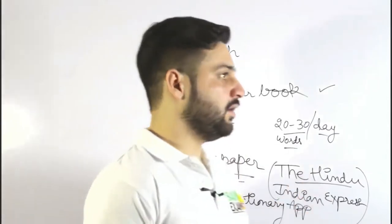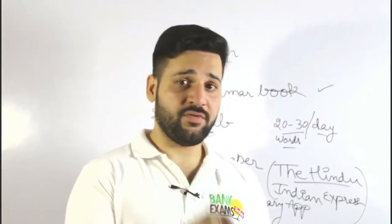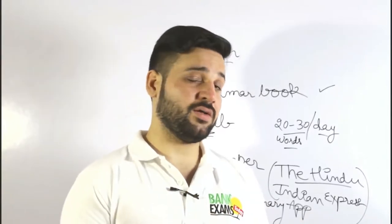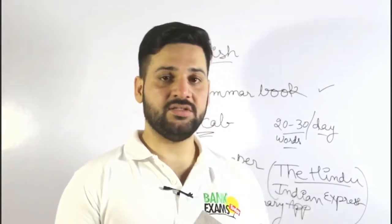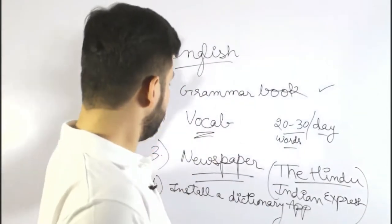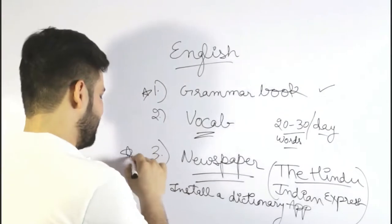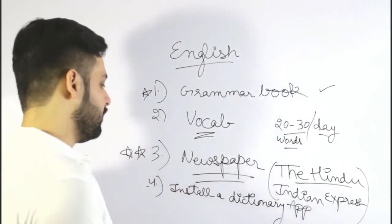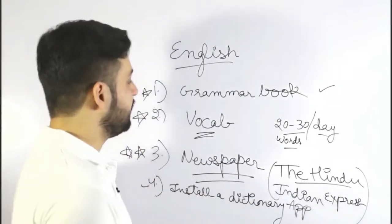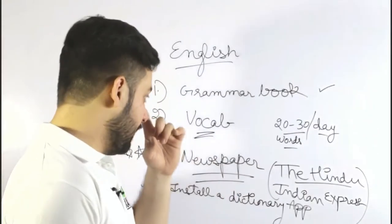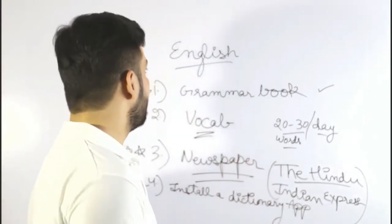For the reading comprehension part, I have an RC workbook ebook available for free on bankexamstudy.com. It contains exam-level RCs, so follow that book. To summarize the English section: the grammar book is the most important thing, followed by the newspaper. The dictionary is optional. I'm posting two or three articles a day only on the English section on bankexamstudy.com, so follow that as well.